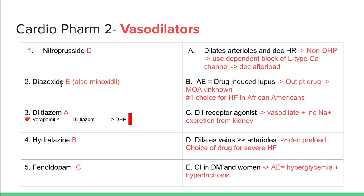Diazoxide — I like to think of diazoxide as thiazide's twin. Just like thiazide, diazoxide is also contraindicated in diabetes. Diazoxide and minoxidil together are contraindicated in women because they cause hypertrichosis or excessive hair growth, but these are also good vasodilators. Diltiazem is our non-dihydropyridine — dihydropyridines selectively work on blood vessels, while diltiazem and verapamil are non-dihydropyridines that also can act on the heart. Verapamil works mostly on the heart; diltiazem is sort of in the middle.